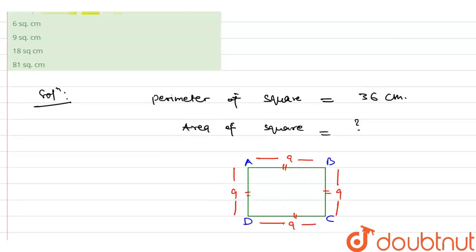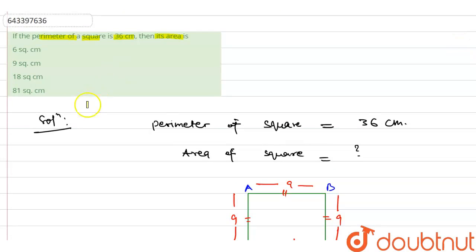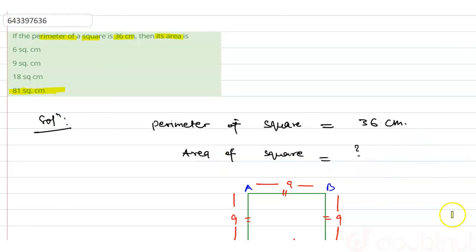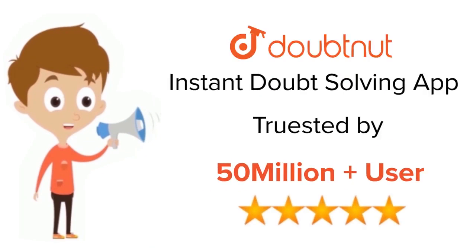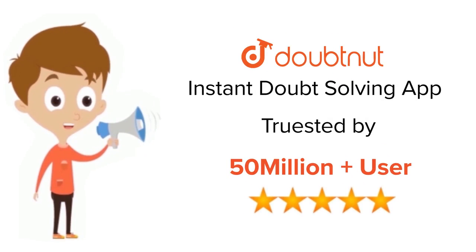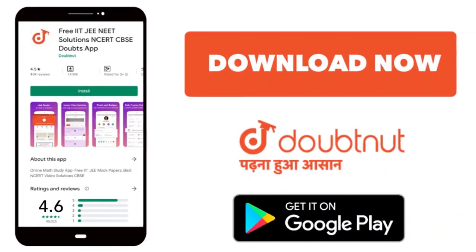And now we will check in the options. Our last option is 81 centimeter square, and this will be our answer. For class 6 to 12, JEE and NEET level — trusted by more than 5 crore students. Download the Doubtnut app today.